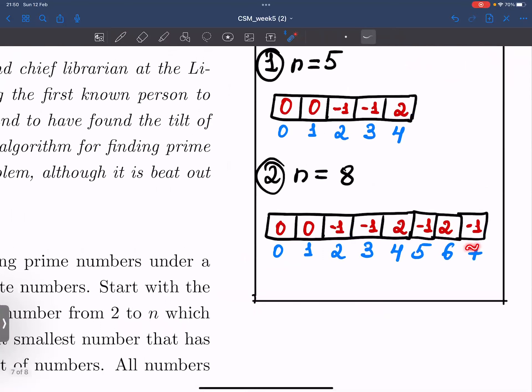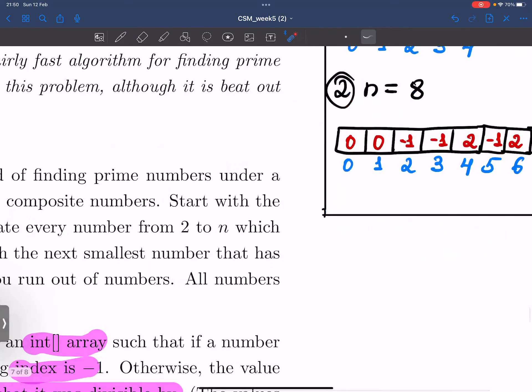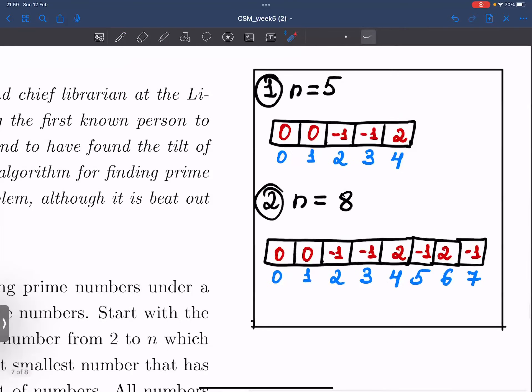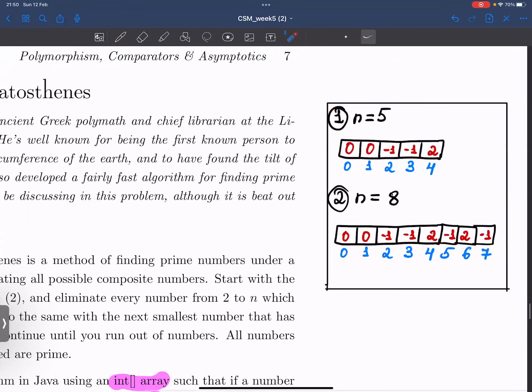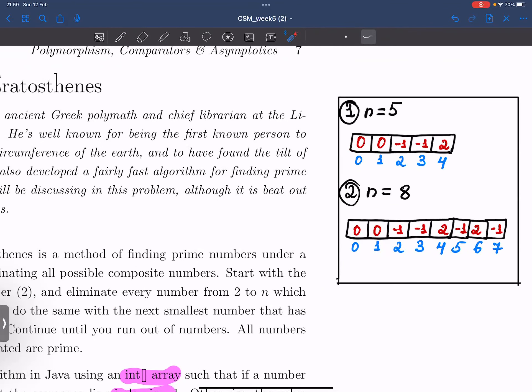And at index 7, we're going to have minus 1, because 7 is a prime number. Of course, feel free to show these examples to your students, because I feel like in this problem, it's very hard to understand without having proper examples.